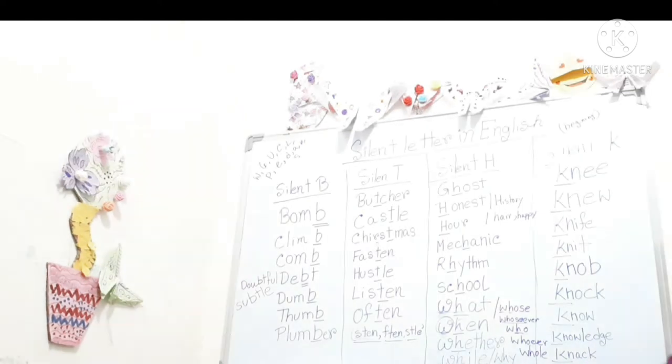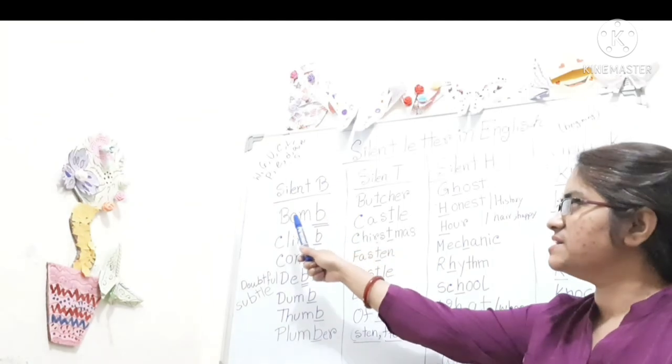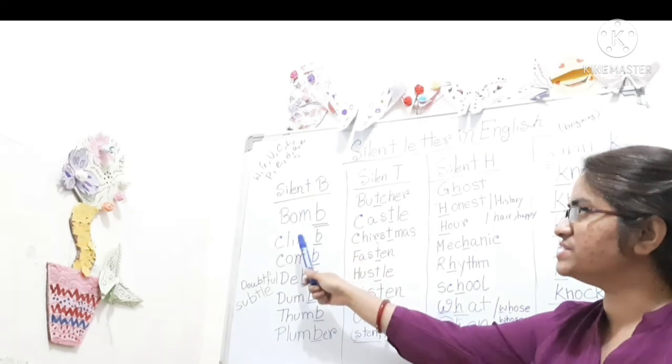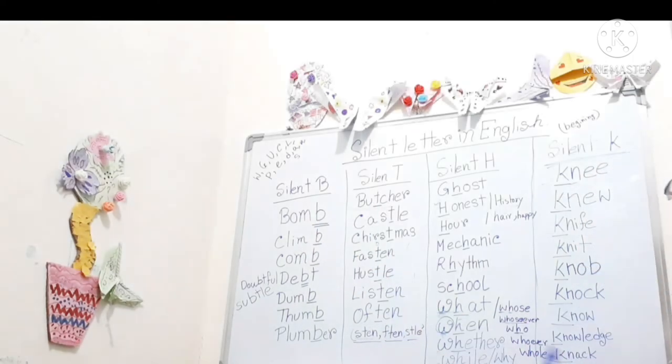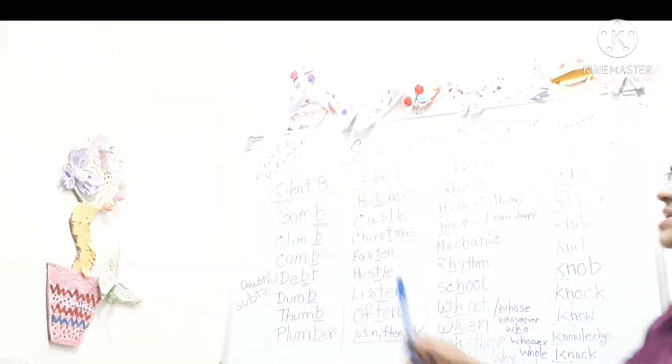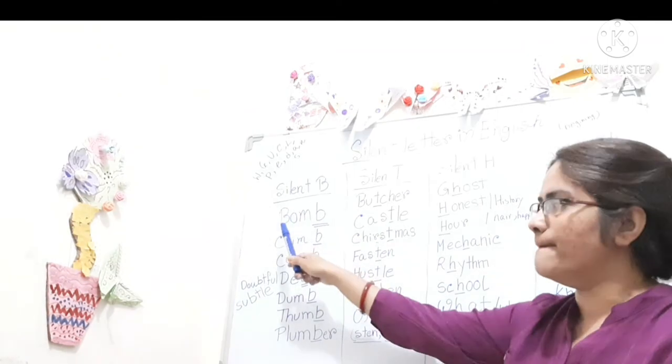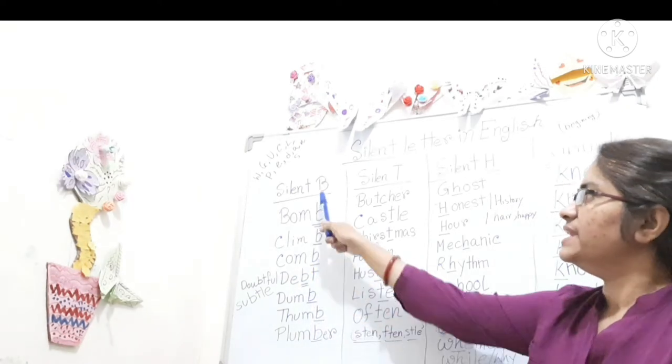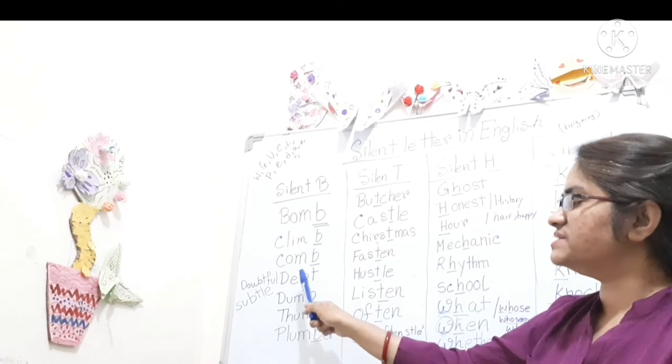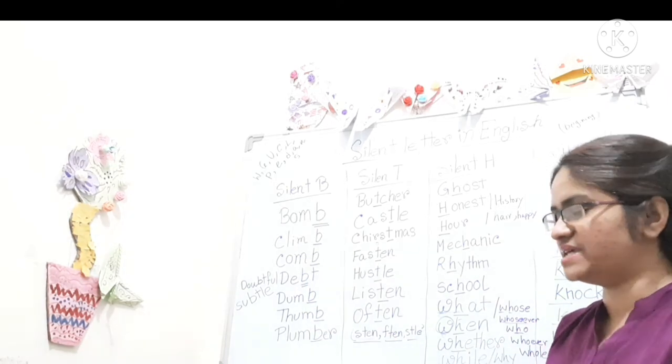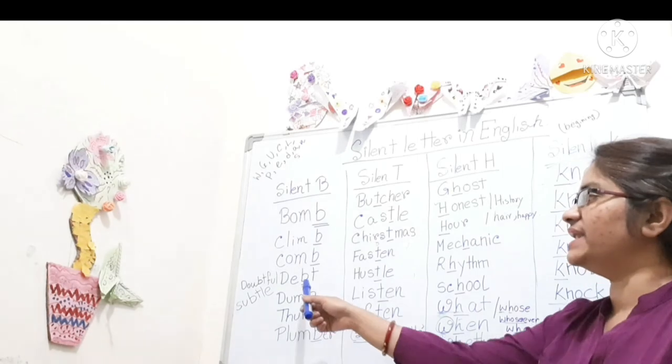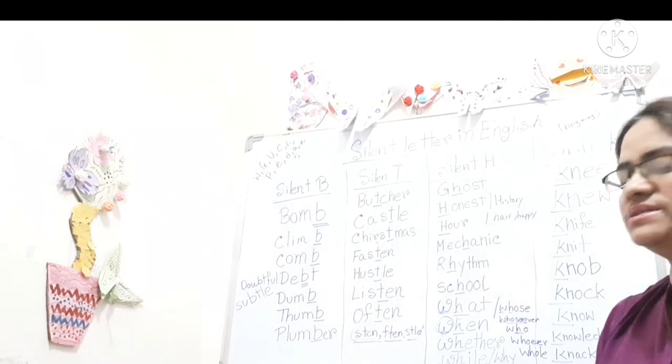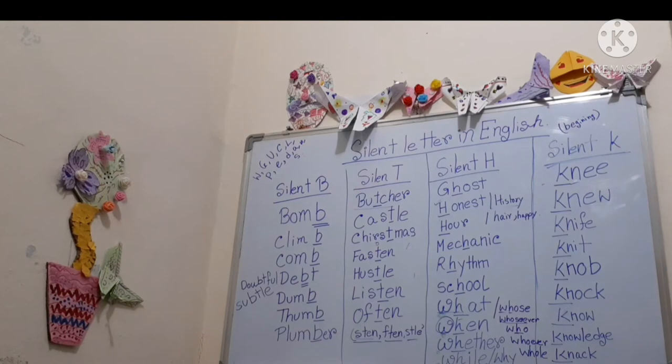That means whenever letter B is sitting just after the letter M, in that case, we are not pronouncing letter B. In that case, letter B is silent. So we have to pronounce up to M. So bomb, climb, comb. But in this case, whenever the letter B is present just before the letter T, in that case, we are not pronouncing letter B. So letter B is silent. Like D-E-B-T, debt. We are telling debt? No, we are telling debt.